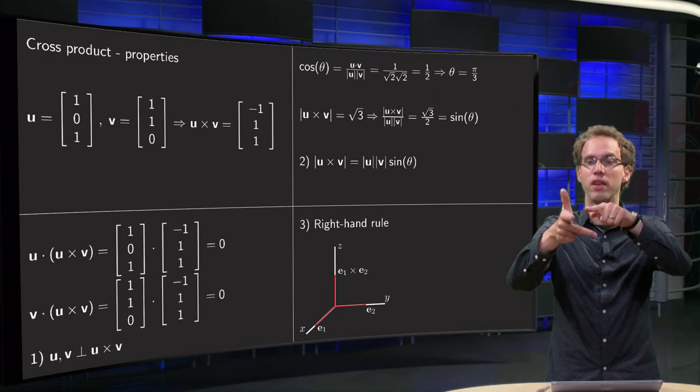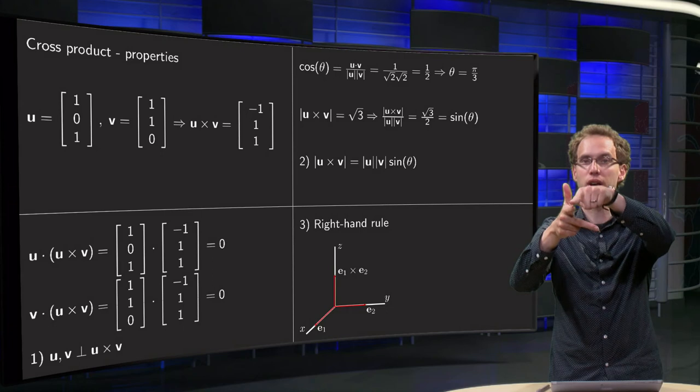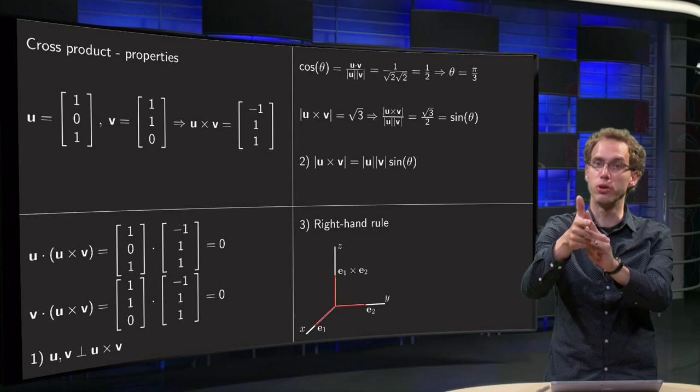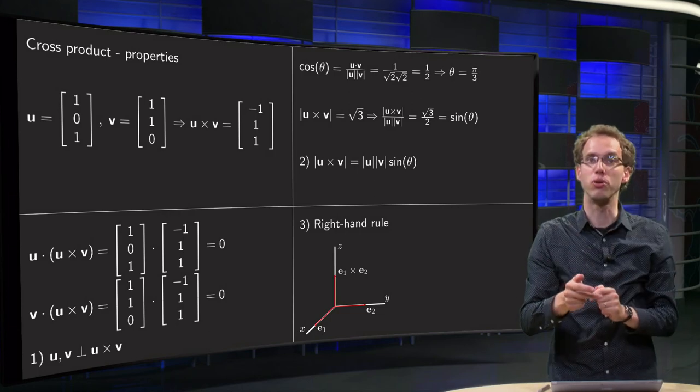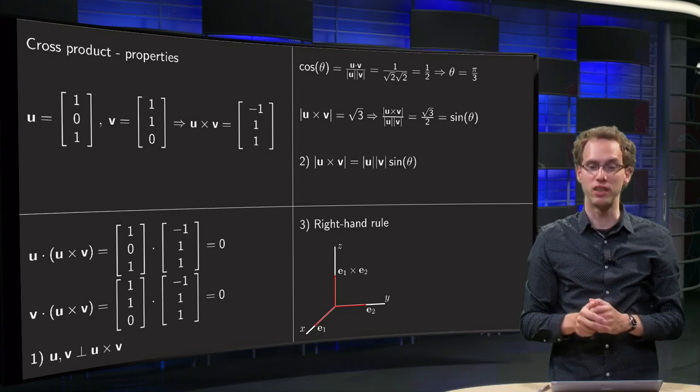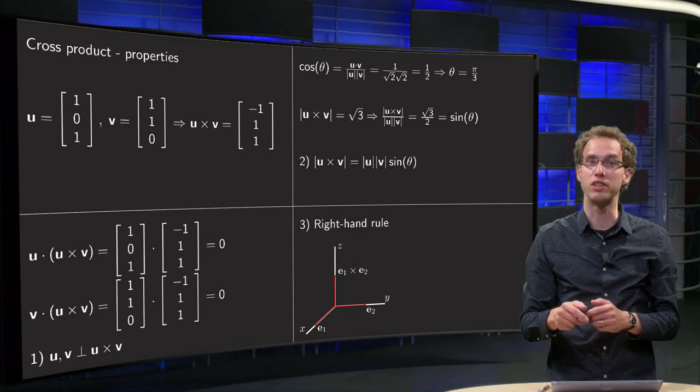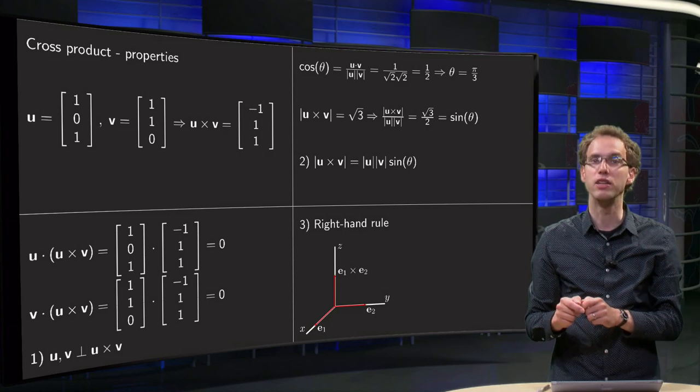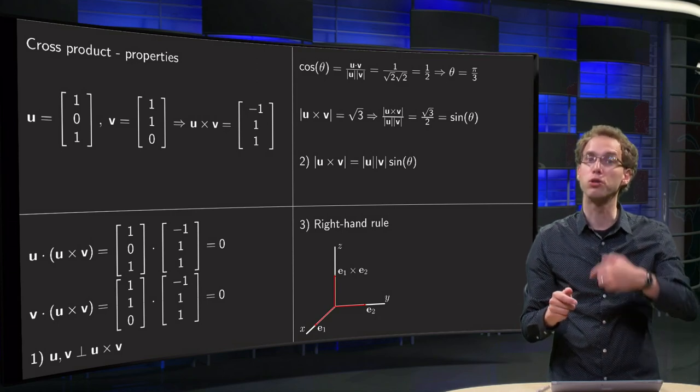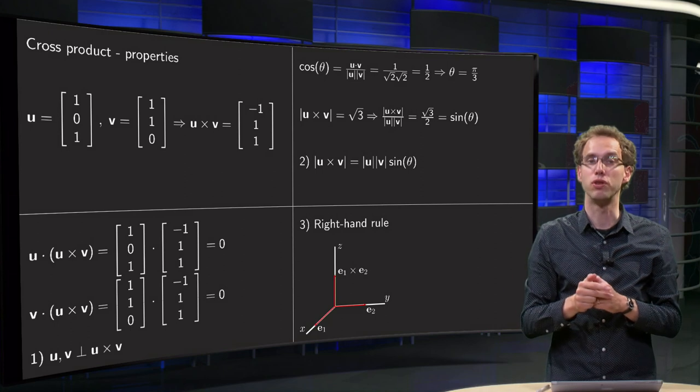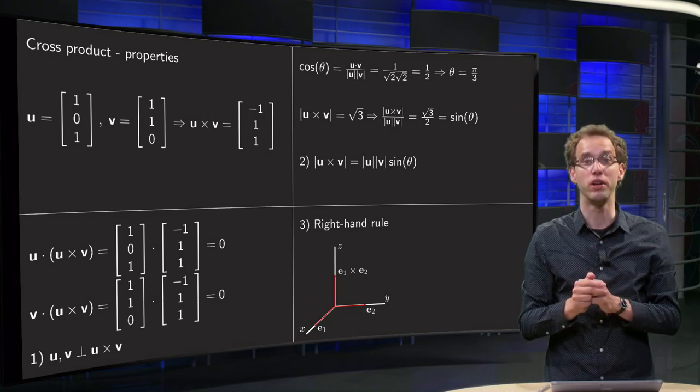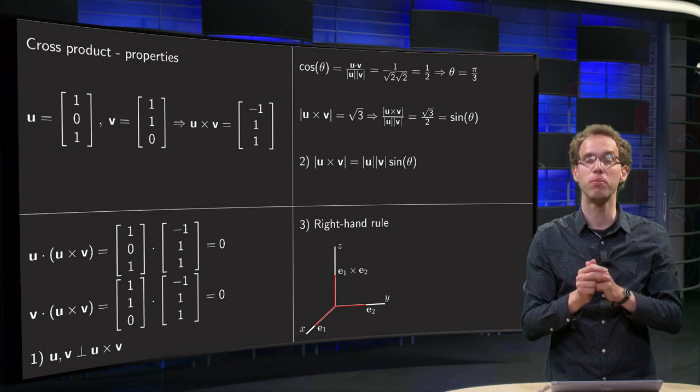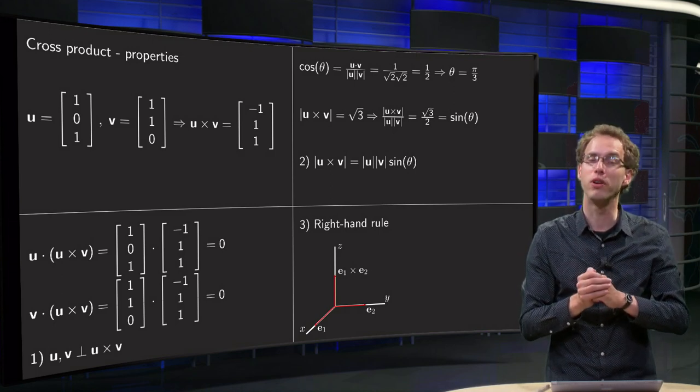And that is fixed by the right hand rule. How does that work? If you have your u in the direction towards you, with your v in this direction over here, then your u cross v goes up. It's called the right hand rule. It is illustrated in the picture with the coordinate axis. Where the e1 is going towards u, the e2 is going to the right, and then your cross product has to go up. So to determine the orientation, you have to use the right hand rule. So those three properties fully specify your cross product.